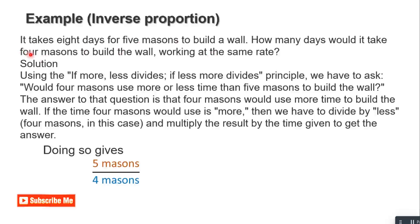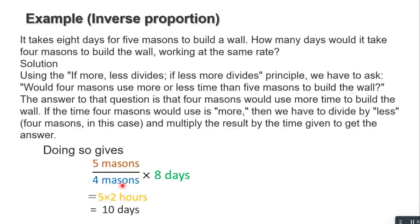Since four machines use more days, we divide by the lesser quantity. We take five divided by four, then multiply by the known number of days, which is eight. Eight divided by four gives two, and five times two gives ten. So it would take four machines ten days to build the wall. You can use a calculator to verify. Please pause and replay the video as needed until you understand.